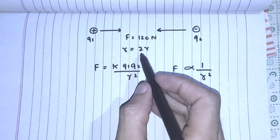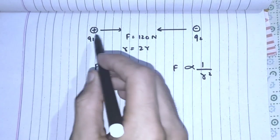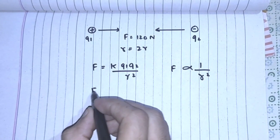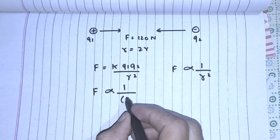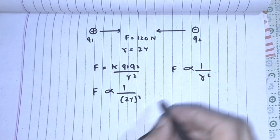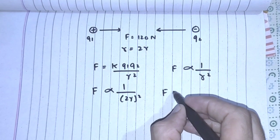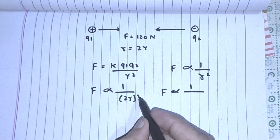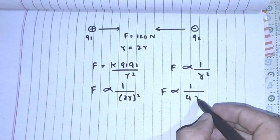Now if we double the distance between the charges, what will be the effect on force? Force will be 2r square. This leads to F is proportional to 1 over 2 square, which is equal to 4, and r square.